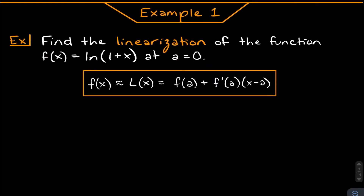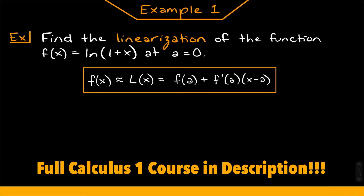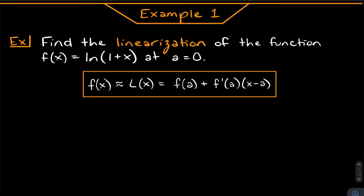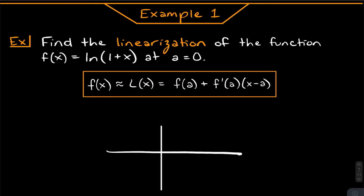We're actually going to do an example of exactly this now. We're going to find the linearization of the function f of x equals natural log of 1 plus x at a equals 0. This entire thing is asking for the linearization — it wants us to find the equation of the tangent line — so we can actually approximate natural log of 1 plus x.